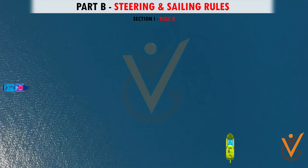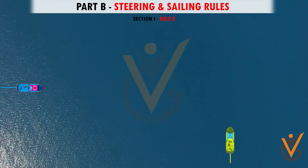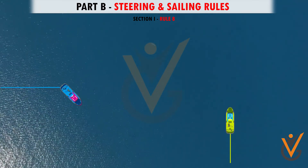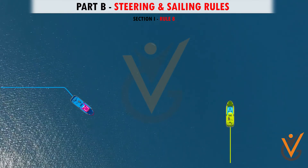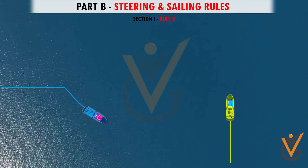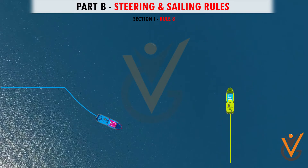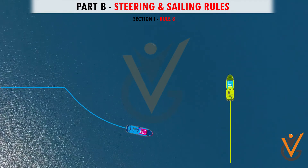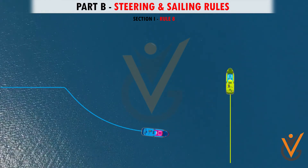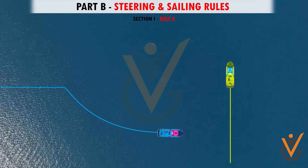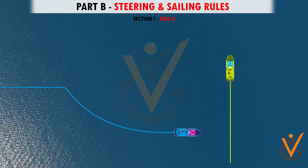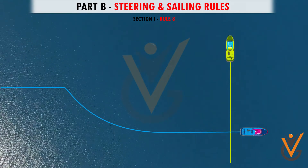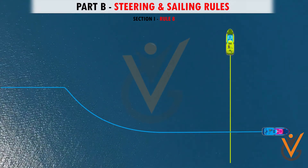Rule 8 states that any action taken to avoid collision shall be positive, made in ample time, with due regard to the observance of good seamanship, and be large enough to be readily apparent to another vessel.